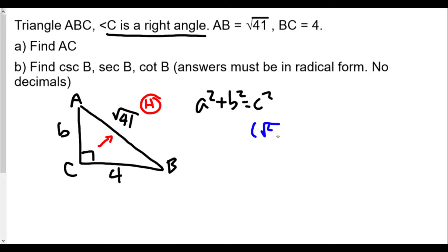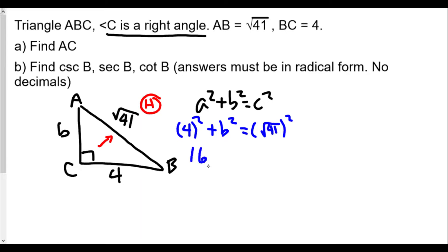A lot of students ask why they have to write everything out — you'll be surprised how helpful it is. So A is 4², and we are looking for b². I want to make sure I don't make errors because it's possible to make errors, and we want to minimize that. So 4² is 16, and we have b² on the other side, while (√41)² is going to be 41.